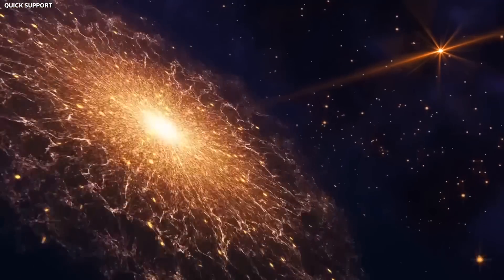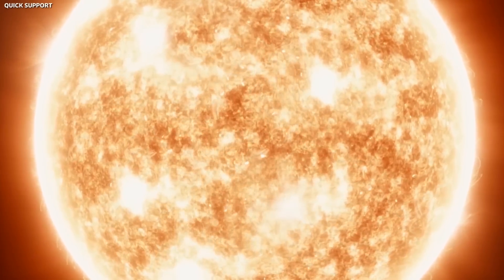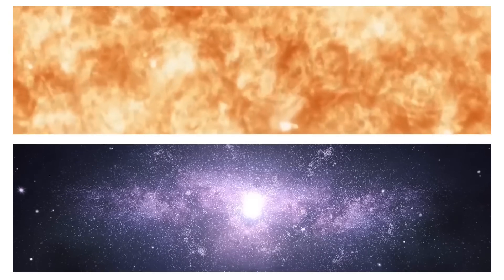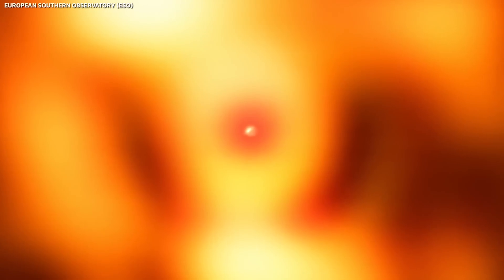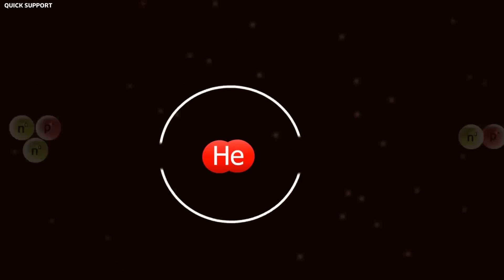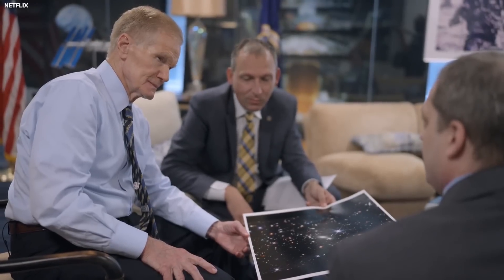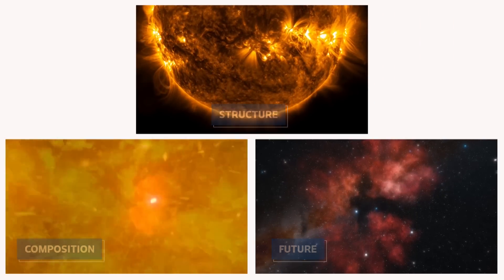Over time, the outer layers contract again, heating up and increasing the star's luminosity. This cycle of expansion and contraction gives rise to the brightness variations we observe. So every time Betelgeuse pulsates, it provides astronomers with a window into its internal workings. By studying these pulsations, scientists can glean insights into the star's structure, composition and even its future. For example, have you ever wondered about the colors of the stars?